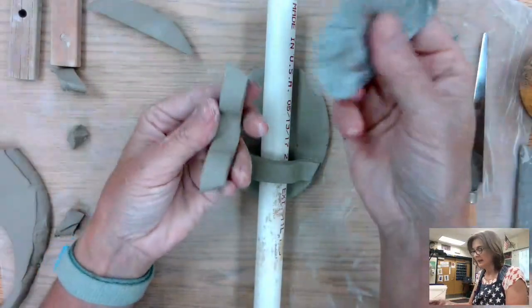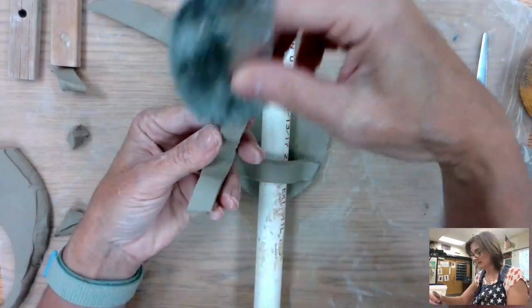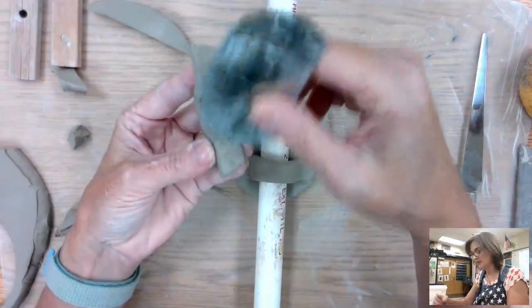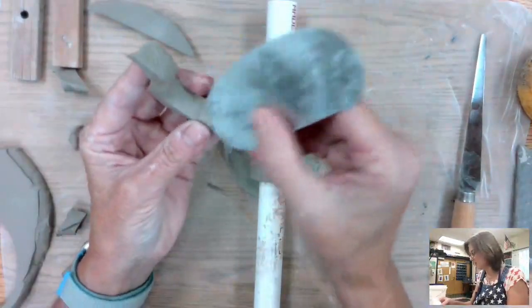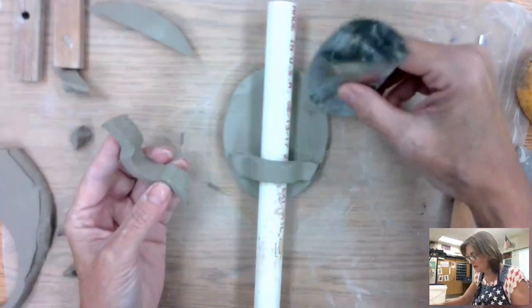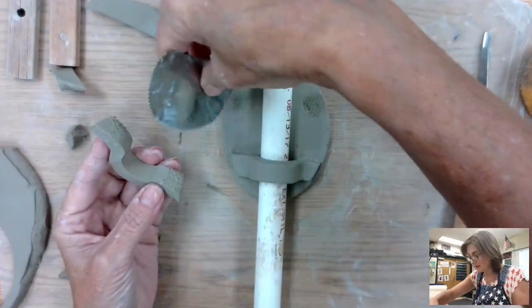And then again, remember, you want to use this metal rib with the teeth to create your scoring. That's the best. You don't want to use a felting knife. You don't want to use a pin tool. This is faster, more efficient, and it works a little bit better.